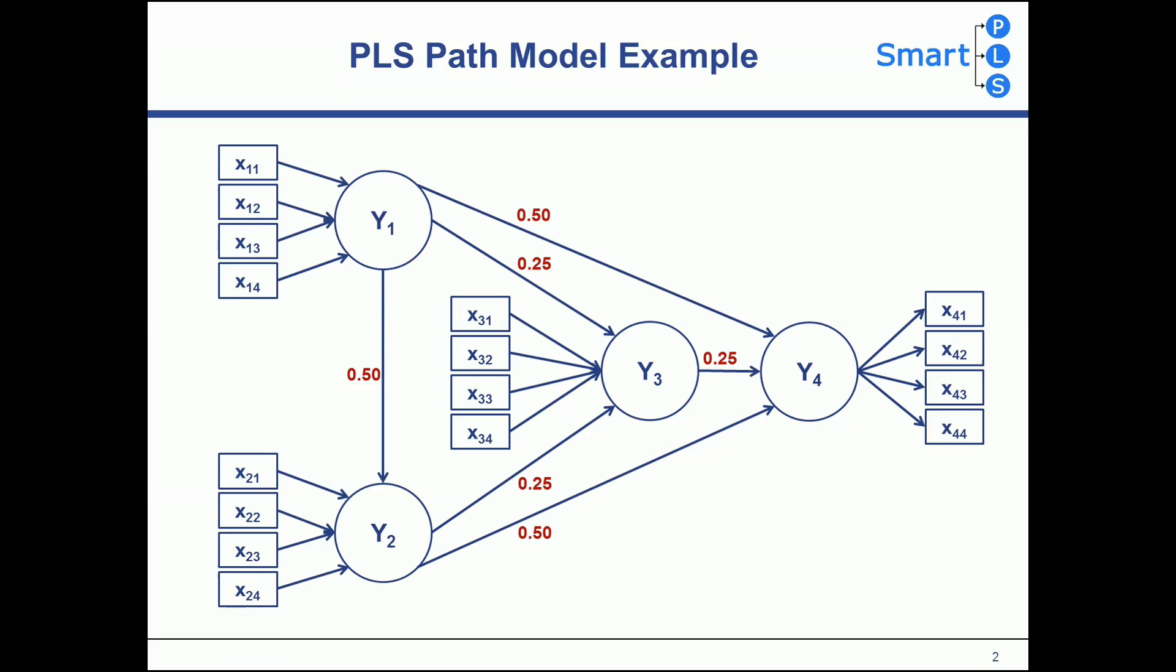Let's take a look at a PLS path model example. Standard PLS results show the estimated coefficients between latent variables in the structural model. The size of the standardized path coefficients allows us to determine the relative importance of one construct to explain another one.